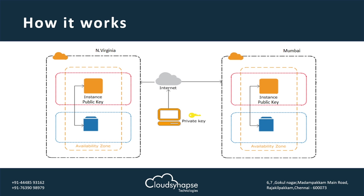Key Pairs are regional services. For example, if I create one Key Pair in North Virginia, I can use that Key Pair within that region — in another availability zone or any instances within that VPC. But we cannot use the same key in multiple regions, because if you go to the Mumbai region, that key won't be available in another region.